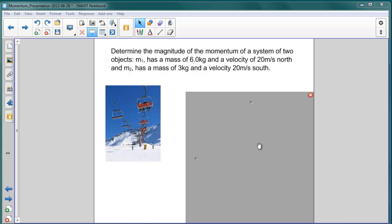One has a mass of 6 kilograms and a velocity of 20 meters per second to the north. And the second one has a mass of 3 kilograms and a velocity of 20 meters per second to the south.